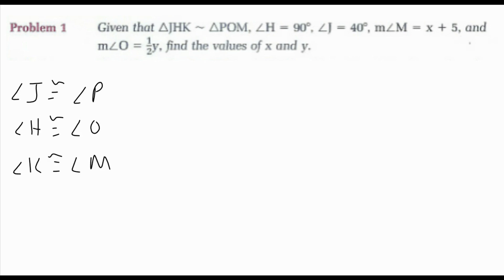I know that angle H is 90 degrees, so that means angle O is 90 degrees. I know angle J is 40 degrees, so that means angle P is 40 degrees. I know all three angles would add to 180, so 40 plus 90 is 130. 180 minus 130 would make angle K and angle M 50 degrees.